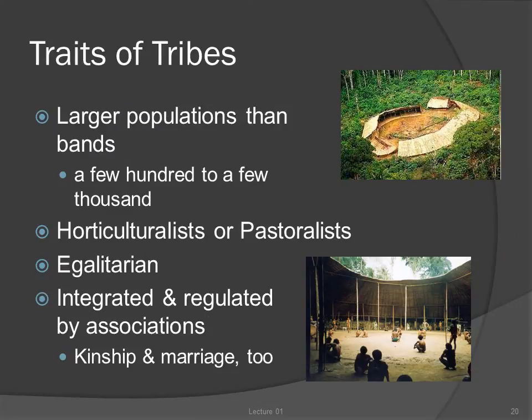The next most complex form is the tribe. Tribes can be either hunter-gatherers or farmers, sedentary or nomadic, but they tend to be horticulturalists or pastoralists more often than not. Their populations are rather larger than bands, a few hundred to one or two thousand. Because there are more people in a tribe, it is more difficult to tie them together into a single society.